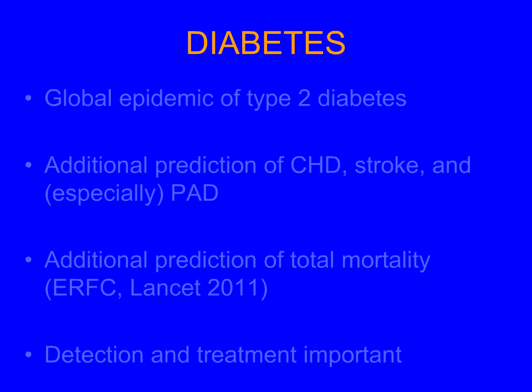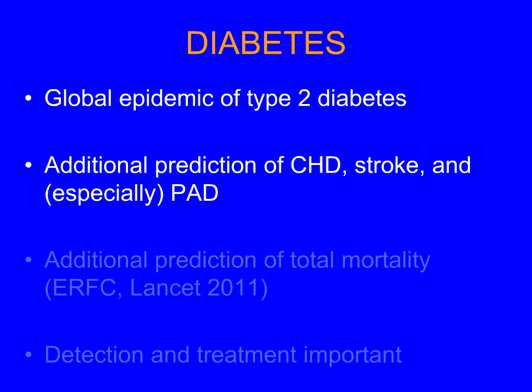The other thing that obesity is doing is driving a global epidemic of type 2 diabetes — maturity onset diabetes, distinct from type 1, which occurs due to pancreatic destruction in younger people. Now, this is a case where diabetes definitely adds prediction of coronary heart disease and stroke. And particularly peripheral arterial disease — it's more extensive and goes further. It's an additional predictor of everything bad including death from any cause.